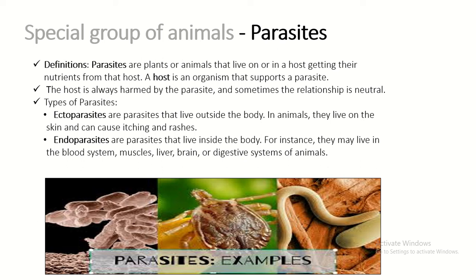There are two kinds of parasites: ectoparasites and endoparasites. 'Ecto' means outside, and 'endo' relates to inside. Ectoparasites are those parasites that live outside the body. For example, lice — jue — which live in our hair.